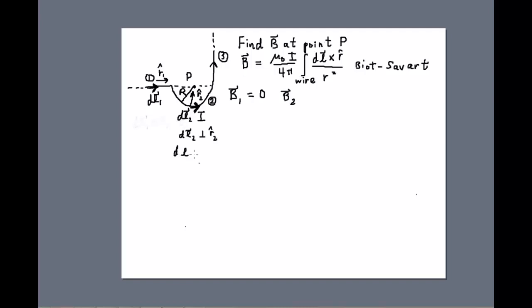So dL2 cross R2 hat, using the definition of a vector cross product, it'll be the product of their magnitudes, dL2. R2 hat is a unit vector so it has magnitude 1, and then the sine of 90 is also equal to 1. And so that just gives me dL2. So I can go over to B2.